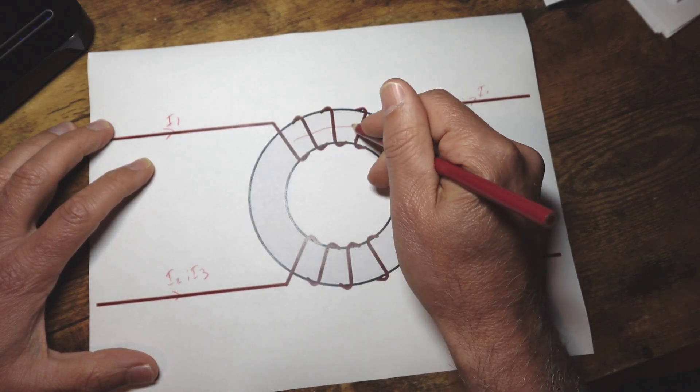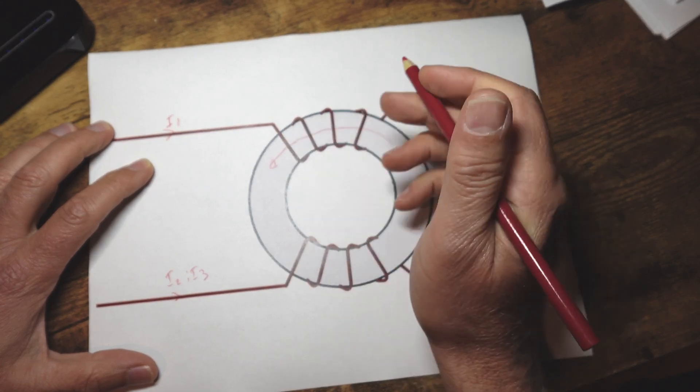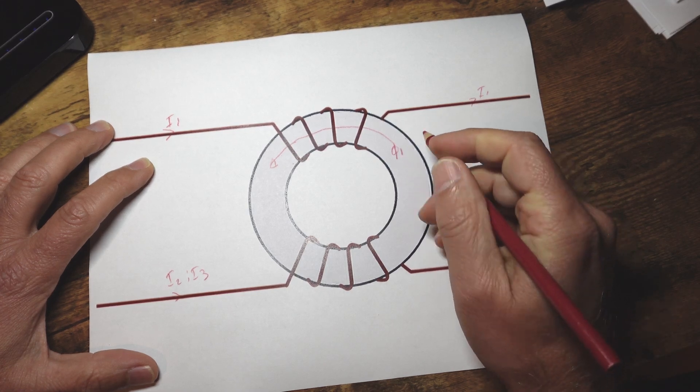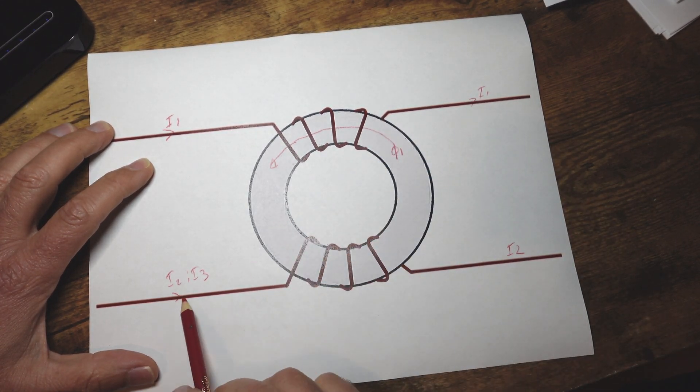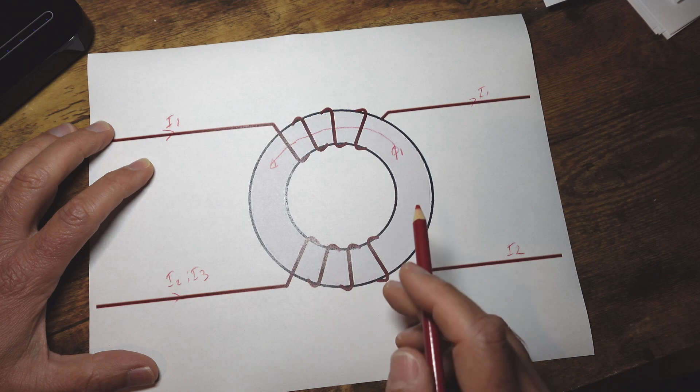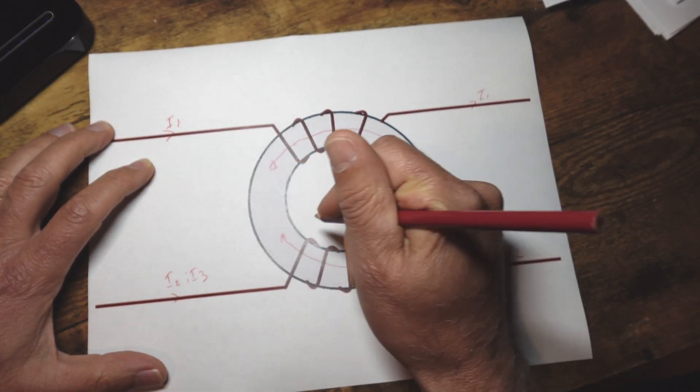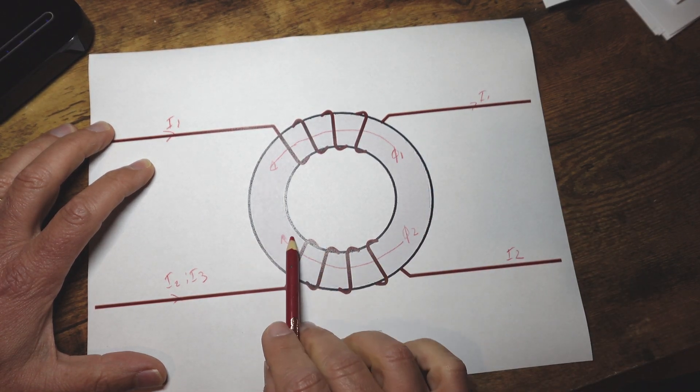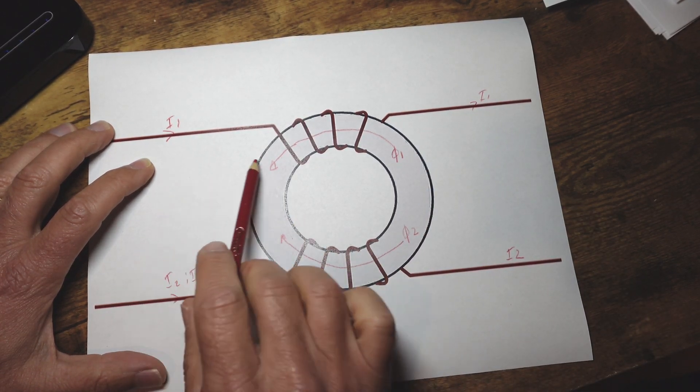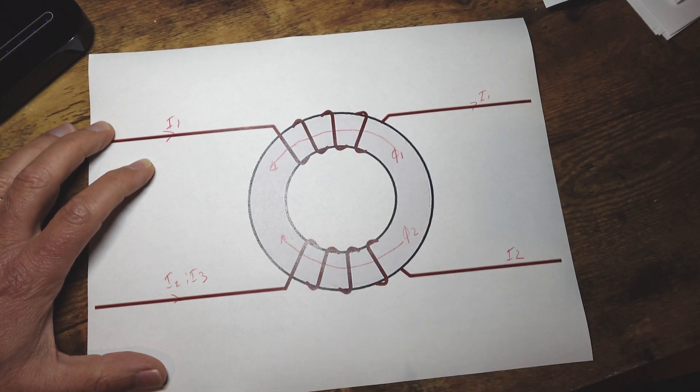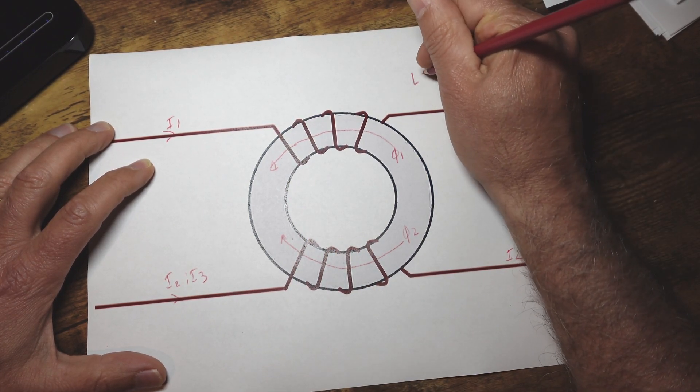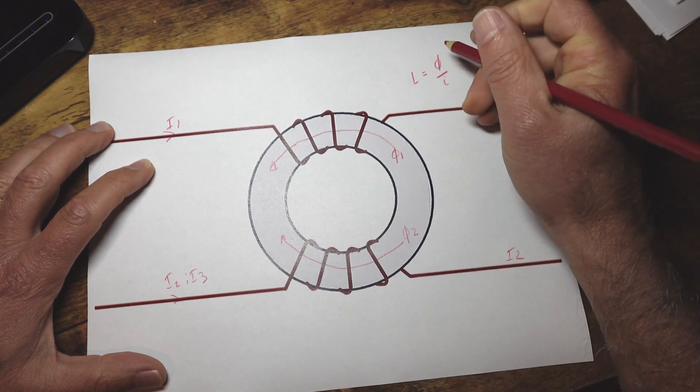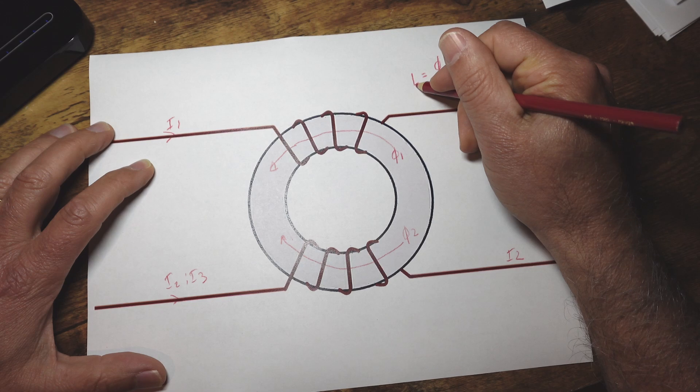I1 goes in and it will create a flux here and that flux we'll call it flux one will go say this way. I2 will come in and create another flux in the opposite direction. We're going to call this flux two and they cancel each other out. So if there's no flux in the toroid and the ferrite there's no inductance because inductance equals flux over current and zero flux, zero inductance.